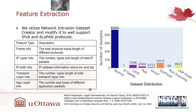Looking at the dataset distribution in detail, as one would expect, the majority of traffic consists of normal traffic patterns. The remaining traffic covers different attack types: IP sweep, land, ping of death, smurf, SYN flood, port scanning, and UDP flood attacks.